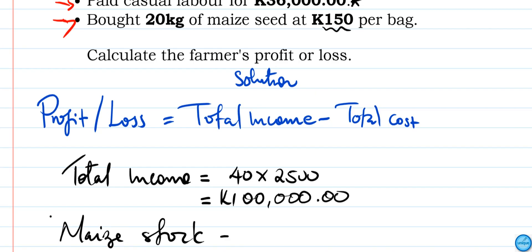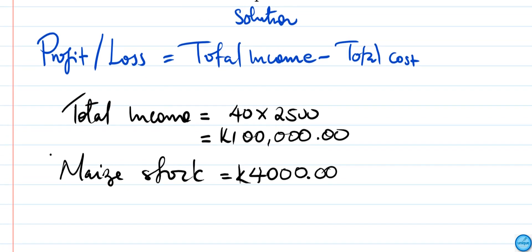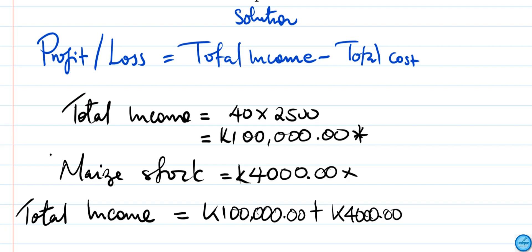To find the total income, we do total income is equal to K100,000 plus K4,000. Total income is K104,000.